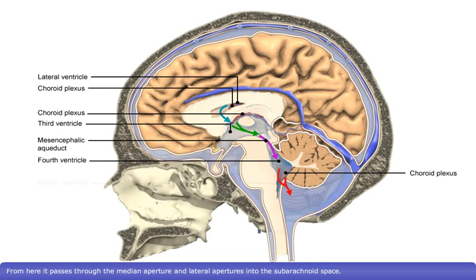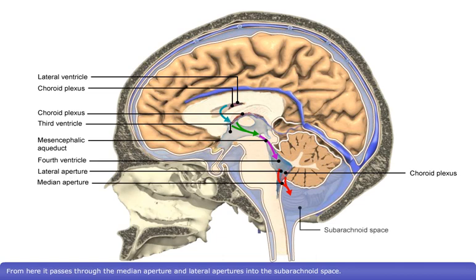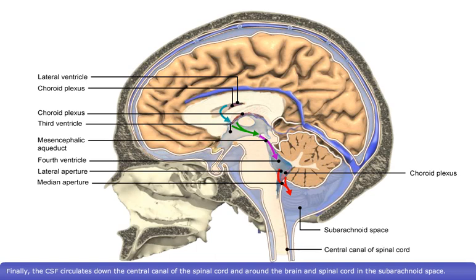From here, it passes through the median aperture and lateral apertures into the subarachnoid space. Finally, the CSF circulates down the central canal of the spinal cord and around the brain and spinal cord in the subarachnoid space.